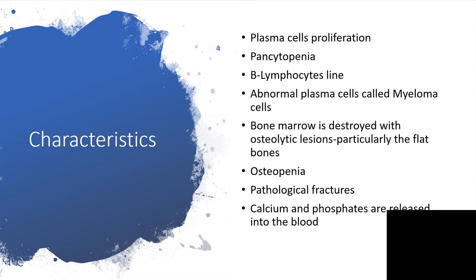Megakaryocytes are affected, so decreased platelets. Erythrocytes are affected, so decreased red blood cells. And all the other cell lines are also affected, leading to neutropenia and so on. B-lymphocyte lines are affected. Abnormal plasma cells are called multiple myeloma cells, or myeloma cells for short.